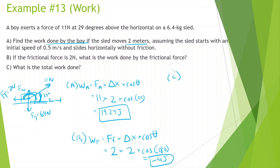Part C: what is the total work done? Work total equals work applied plus work of friction plus work of gravity plus work of normal force. That's 19.24 plus negative 4, plus 0 for gravity (90 degree angle with displacement), plus 0 for normal force (also 90 degrees). So the total work is 15.24 Joules.